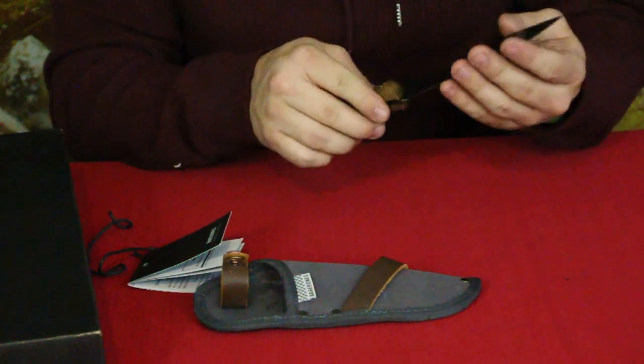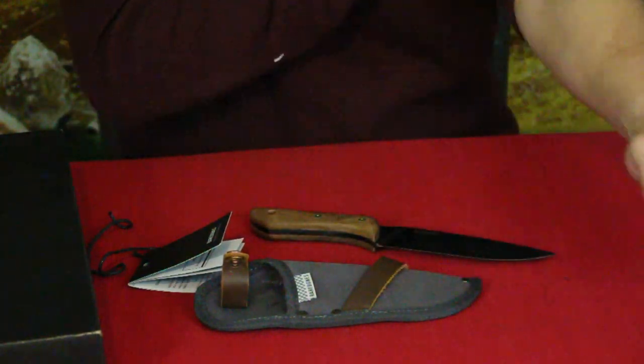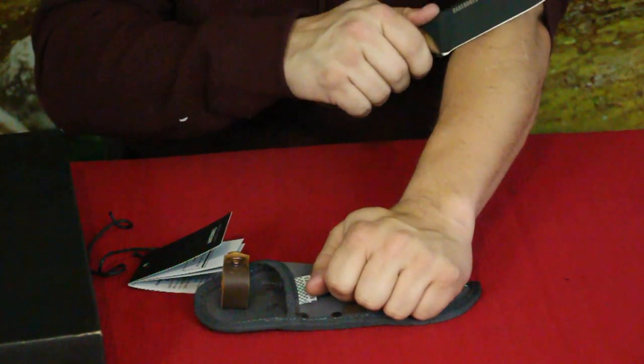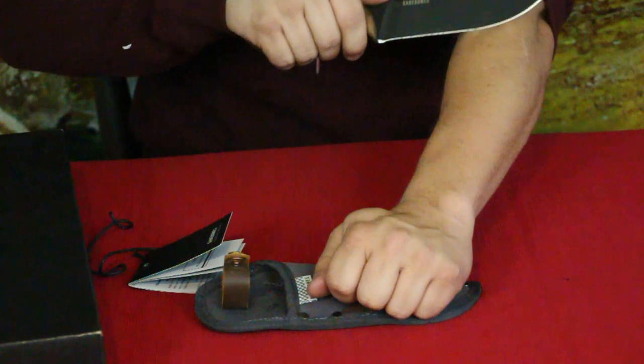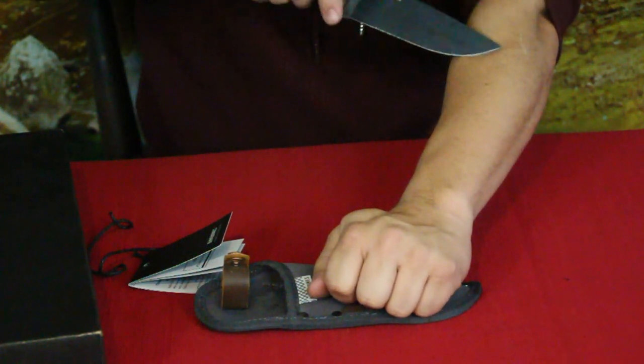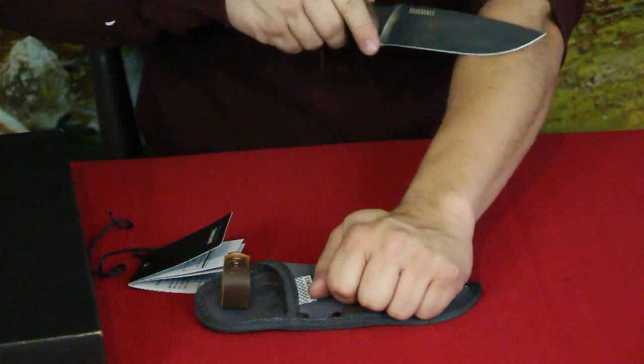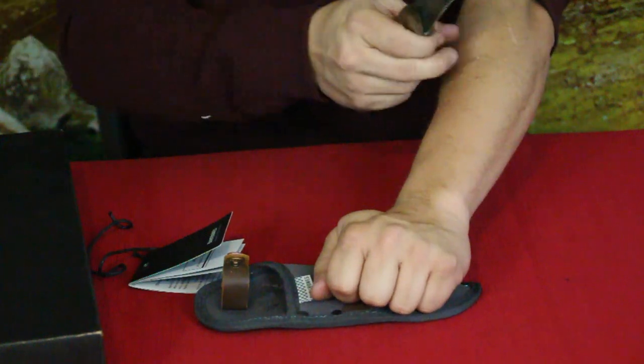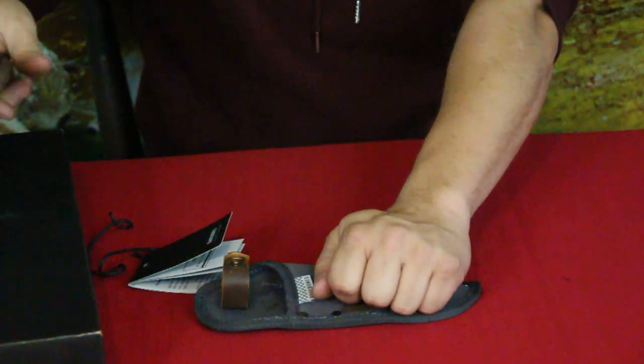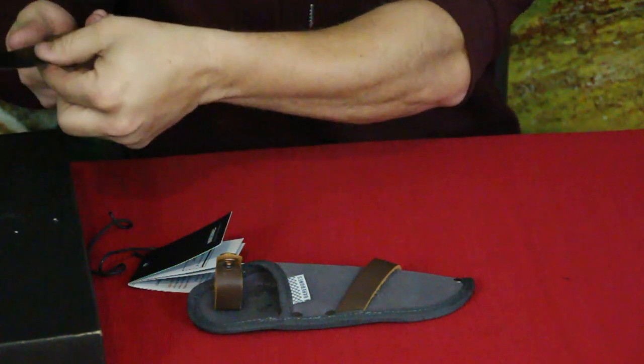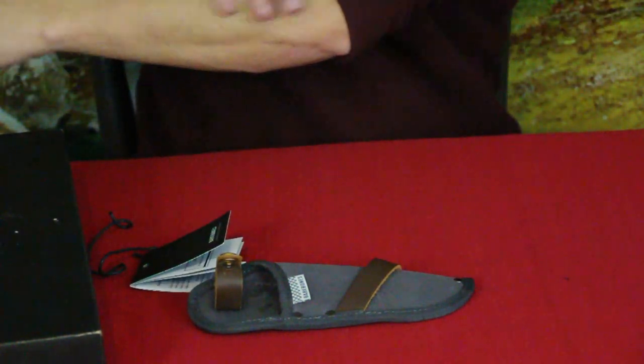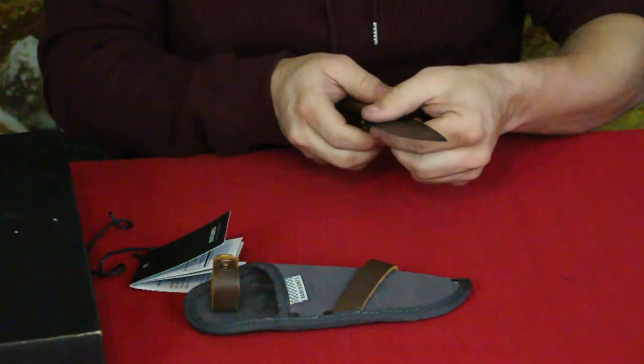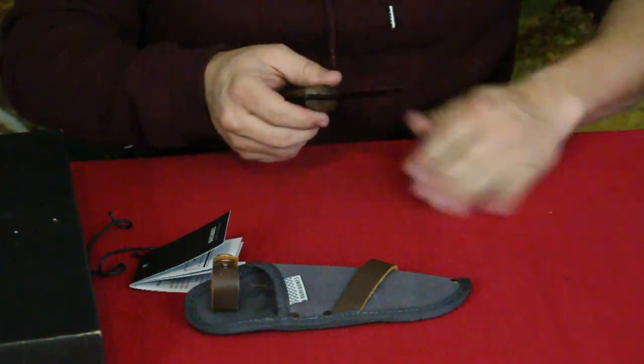One thing I do want to see though is this does seem to have a very nice edge on it. So let's take a quick look and see how this does on the old arm hair here. And yep, there's the back, there's the front, right out to the curve, it's just taking the hair right off. Nice and sharp straight out of the box, shaving sharp as they say. That cleaned it off really easy.